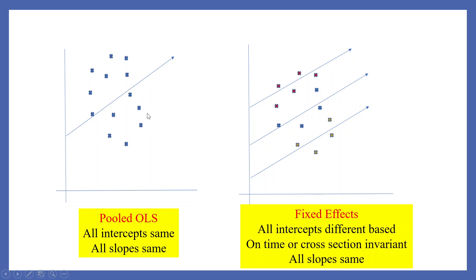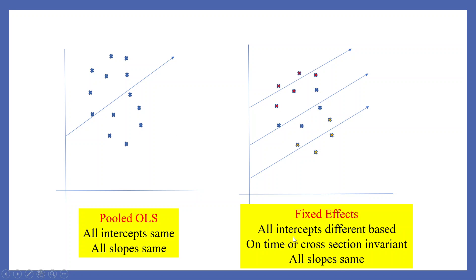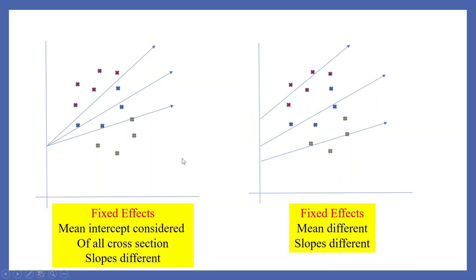Now let's understand the fixed effects model. Fixed effects: all intercepts are different — one, two, three — based on time or cross-sections, but all slopes are the same. In another variant of fixed effects, the mean intercept across all cross-sections is considered, but slopes are different. So in fixed effects, means are different and slopes are different.